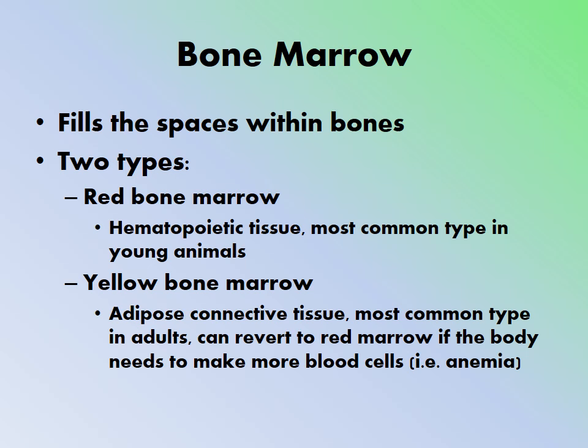Bone marrow fills the spaces within bones and is found in long bones. There are two types. Red bone marrow is hematopoietic tissue where hematopoiesis occurs. It is the most common type in young animals — when an animal is born, most bone marrow is red because significant blood production is needed for growth. As the animal ages, much of this red bone marrow converts to yellow bone marrow, which is adipose connective tissue and is most common in adults.